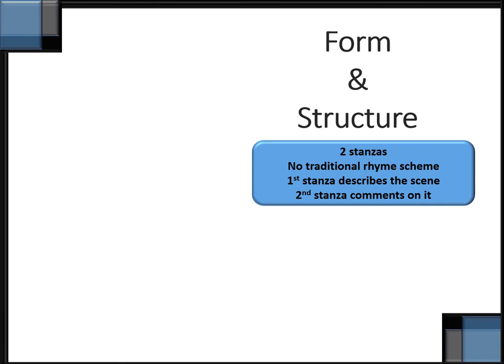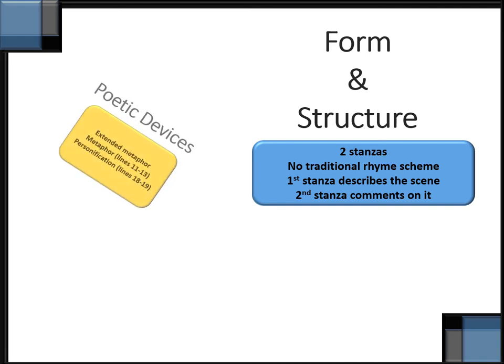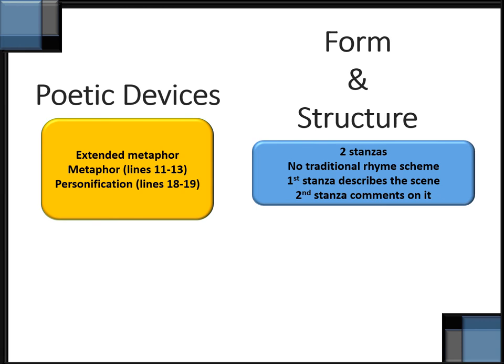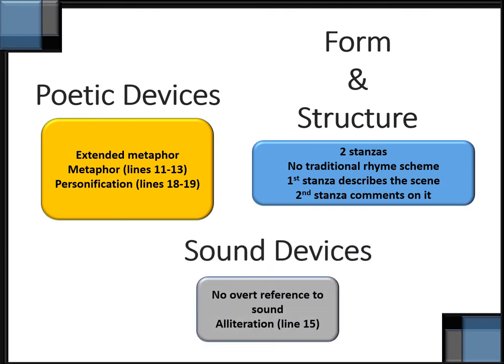When we look at the form and structure of the poem, the poem is divided into two stanzas with no traditional rhyme scheme. Stanza one describes the scene that the speaker is witnessing, and stanza two comments on that scene. Regarding poetic devices, the whole poem is an extended metaphor. We also find examples of metaphor in lines 11 to 13, and personification in lines 18 and 19. Sound devices are found in line 15, where there is an example of alliteration. In the poem as a whole, there is no overt reference to sound — it's almost as if the speaker is witnessing the scene quietly, sitting still and just watching it.